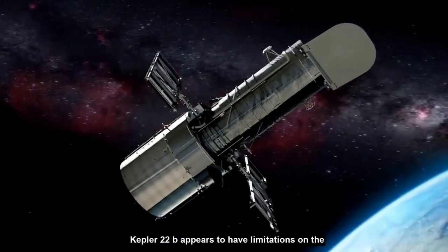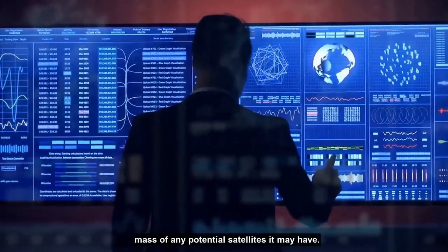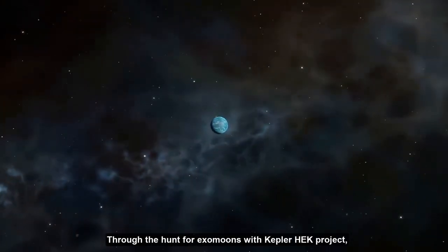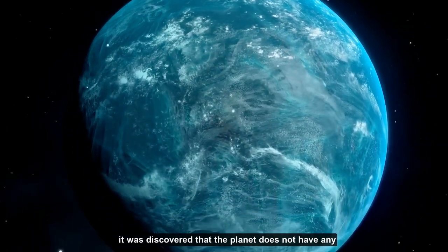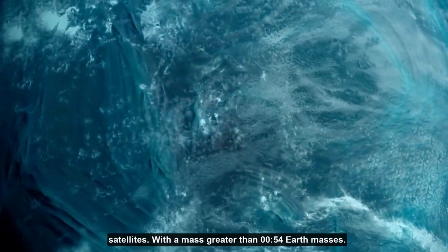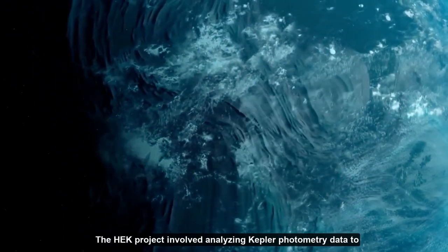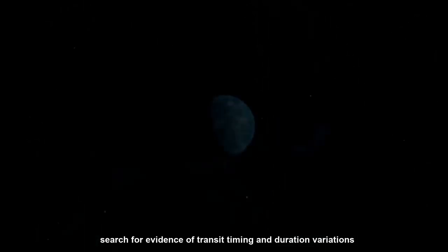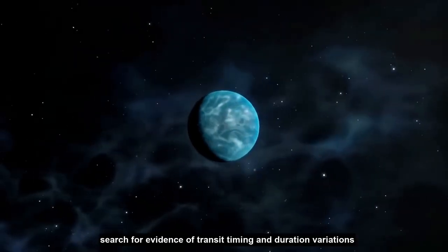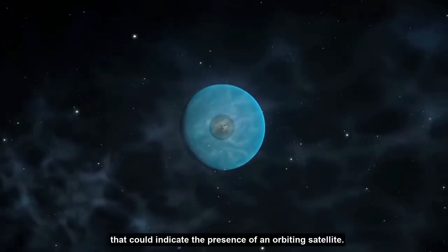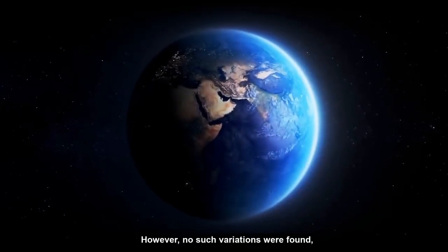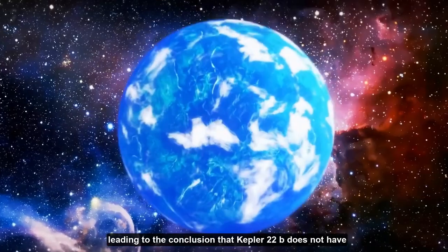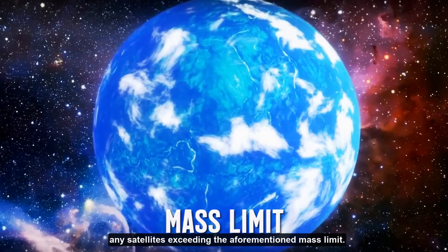Kepler-22b appears to have limitations on the mass of any potential satellites it may have. Through the hunt for exomoons with Kepler HEK project, it was discovered that the planet does not have any satellites with a mass greater than 0.54 Earth masses. The HEK project involved analyzing Kepler photometry data to search for evidence of transit timing and duration variations that could indicate the presence of an orbiting satellite. However, no such variations were found, leading to the conclusion that Kepler-22b does not have any satellites exceeding the aforementioned mass limit.